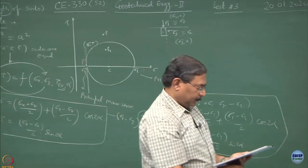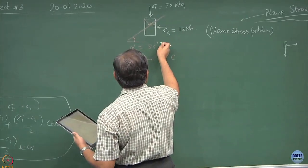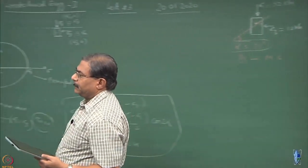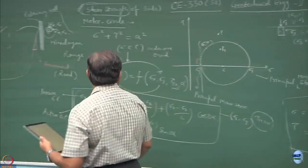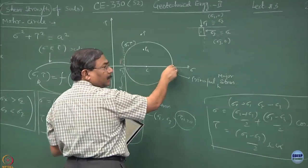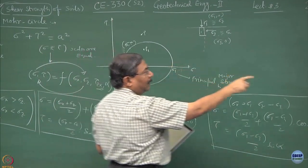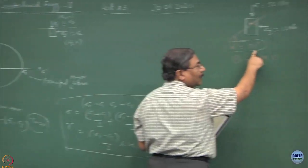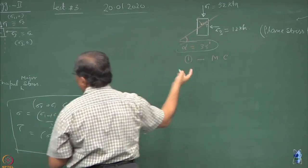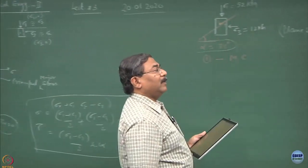Second part of the problem. What it says is, find out the state of stress at 35 degree angle. I have two ways to solve this problem. The state of stress is known - sigma 1, sigma 3. This point is 35 degrees, what should I be doing now? Where is this plane going to lie? Can I project this plane on the Mohr circle?